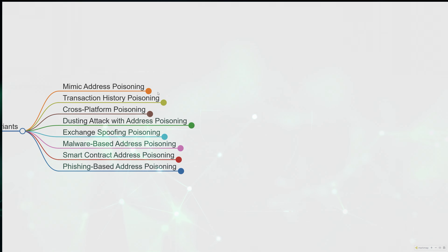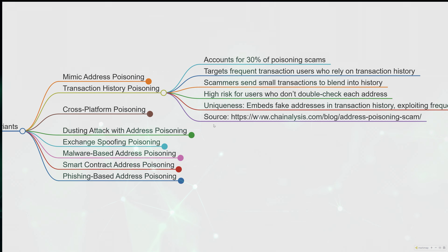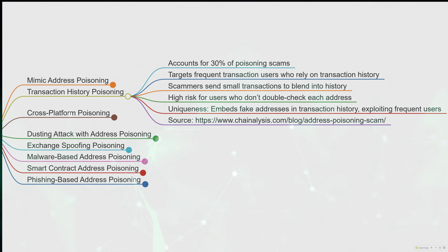The next variant is transaction history poisoning. 30% of recorded address poisoning incidents involve this type. Chain Analysis indicates this form of attack disproportionately targets higher-frequency users, which makes sense — when users frequently do small transactions, they may rely on transaction history, which often leads to oversight. This technique specifically targets users' reliance on transaction history within their wallets.